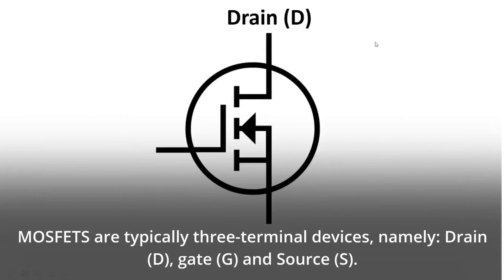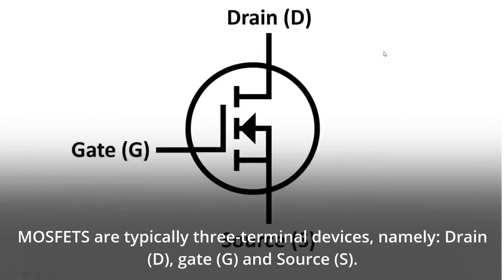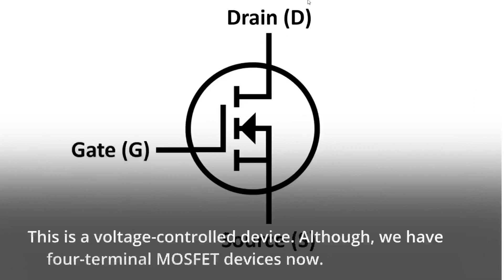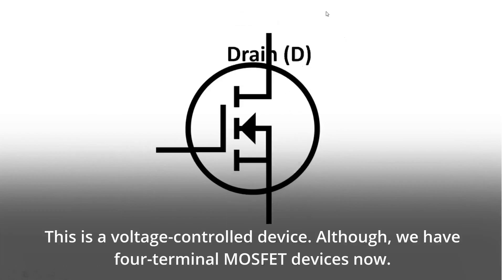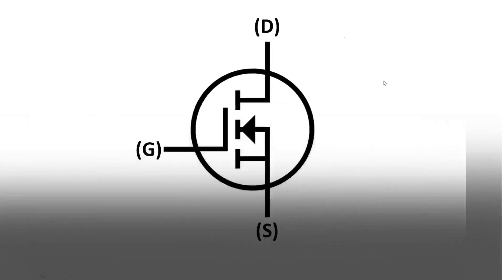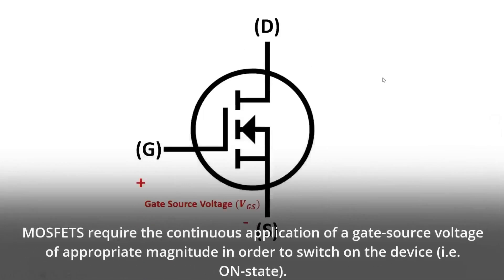Typically, MOSFETs are three terminal devices, namely drain (D), gate (G), and source (S). This is a voltage-controlled device, although we now also have four terminal MOSFET devices. MOSFETs require the continuous application of a gate source voltage of appropriate magnitude in order to switch on the device, i.e. on-state.